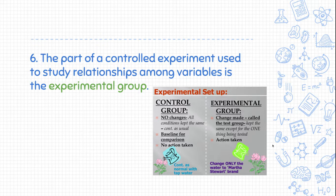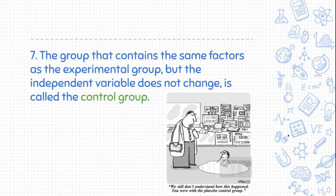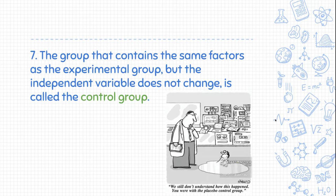The part of the experiment that we give the independent variable to is called the experimental group, or the test group. The group that contains the same factors as the experimental group but where the independent variable does not change is called the control group — it's the group we compare to. For example, it's the old soap we compare the new soap to, or the group that gets the placebo rather than the actual medicine.